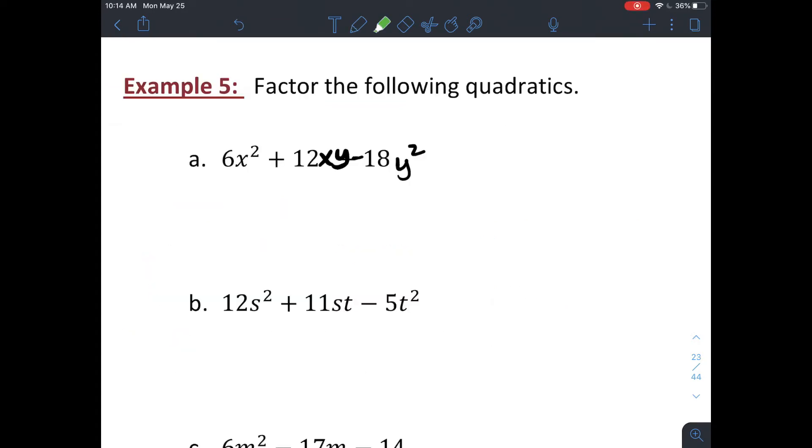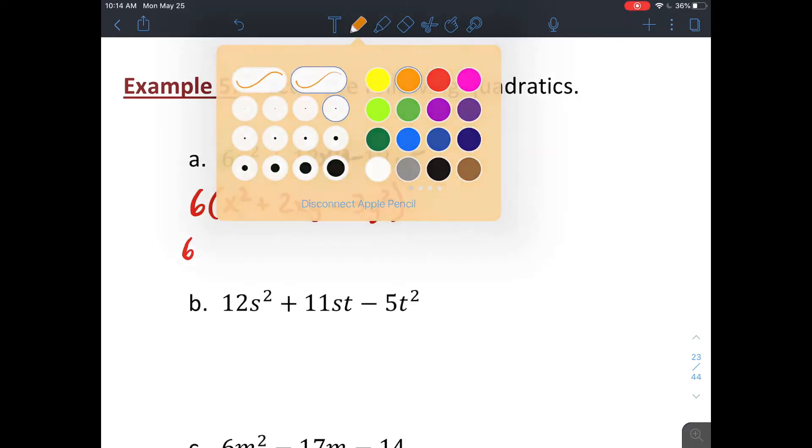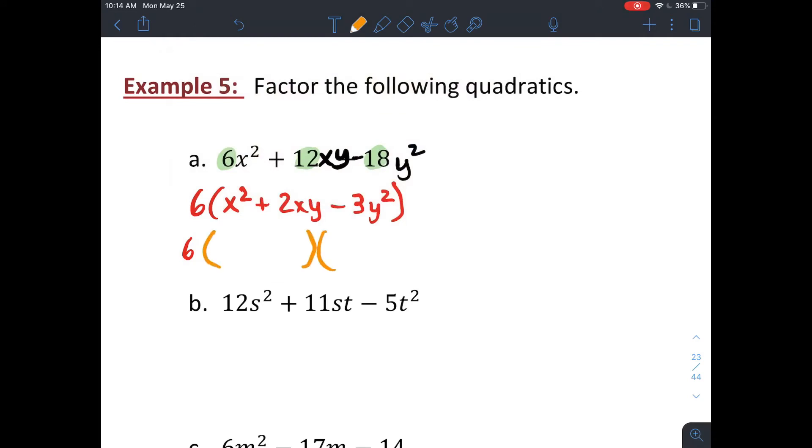We're gonna factor some expressions that are of quadratic in form. So if you look at these, you have a common factor of 6. So always factor out your common factor first. And then if you look at what you're left with, you can factor that. You can guess and check it, or you can factor by grouping. I'm gonna guess and check it first. If you don't like this way, I'll show you another option.